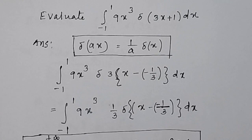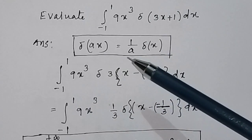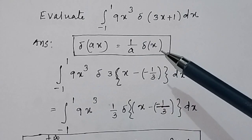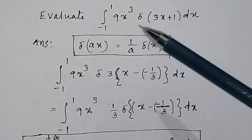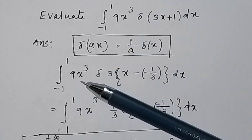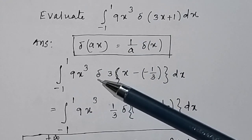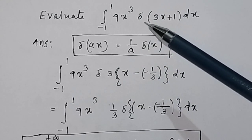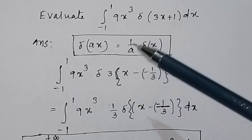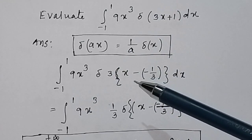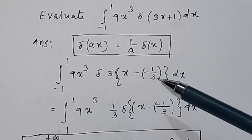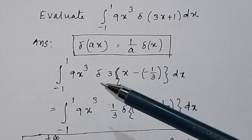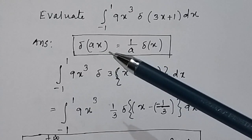Here we apply two properties of the delta function. From the property of the delta function, delta(ax) equals 1 over a times delta(x). This equation is in the form f(x) delta(ax), because if we take 3 common here, in the bracket we have x minus minus 1 over 3 dx, so this will be in the form of delta(ax).